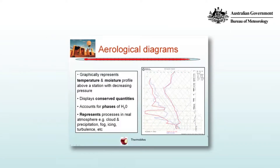An aerological diagram is a diagram on which we can display, calculate, and perform various processes that happen in the real atmosphere. It's where we can graphically represent temperature and moisture profiles above a station with decreasing pressure.